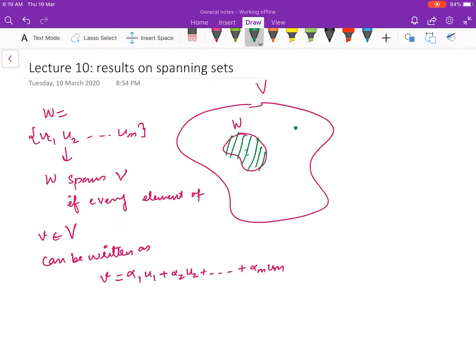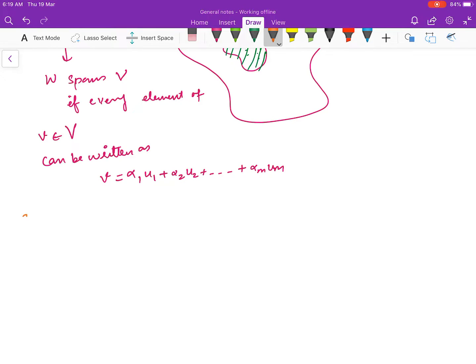Now we have some results which will be helpful. First result: suppose you have a spanning set {u1, u2, ..., um} that spans V. If you take w in V, any other element in V which is not already in the set, then if you bring this w into the set also, this will also span V.